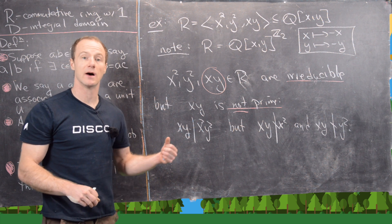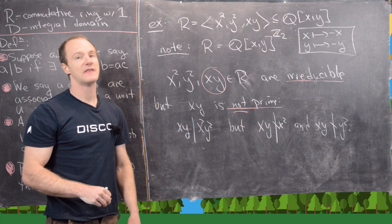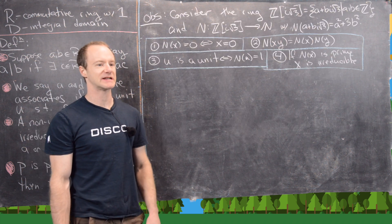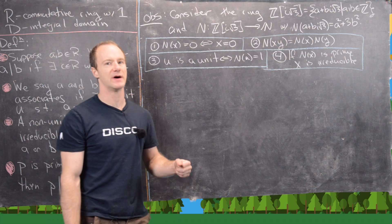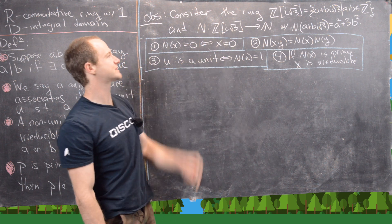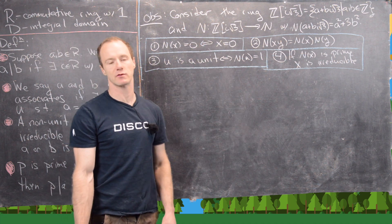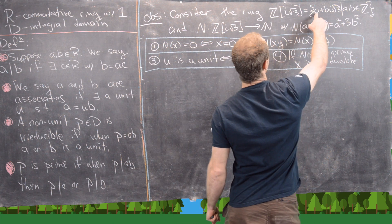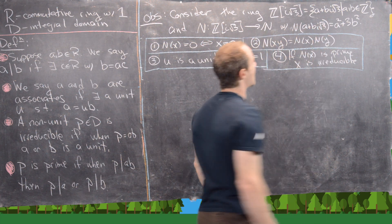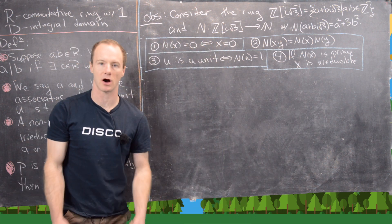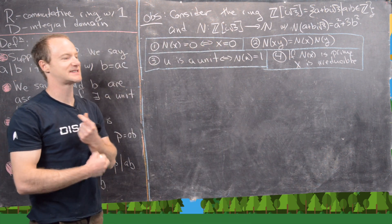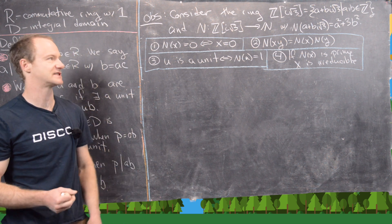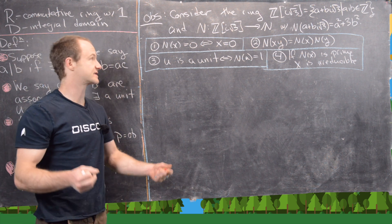We'll now build up another example of something that's irreducible but not prime, in the ring Z[i√3]. In other words, this is all terms of the form a + bi√3 where a and b are integers. This is a subring of the complex numbers, and you can check that using the subring test.